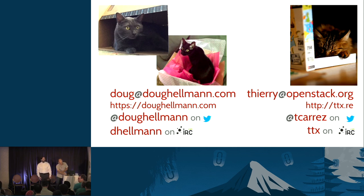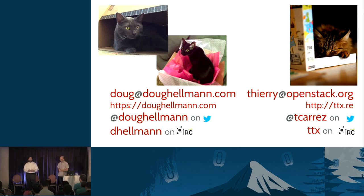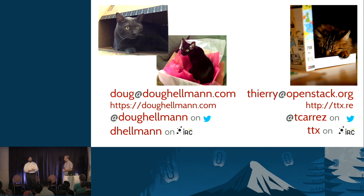Question: Could you explain more about Reno - what are those small files? Answer: Reno uses a collection of small YAML files that live in a particular directory within the source repository. It takes those and compiles them into a larger release document. The YAML file includes different sections for different criticality of notes - like security fix, bug fix, new feature, etc. It organizes the results based on the release series history, knowing based on where that file landed in the commit history what version that feature is in, then organizes within each version number based on criticality.